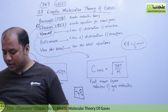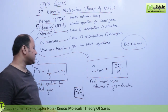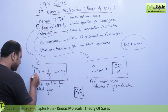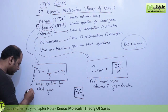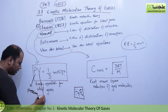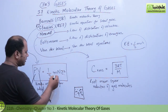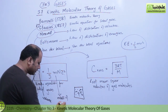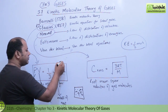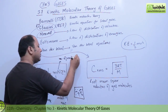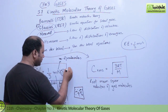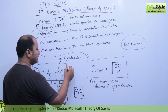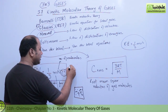The kinetic equation for ideal gases is: PV equals one-third MNC squared. Here P is the pressure, V is the volume, one-third is the numerical constant, M is the mass of the gas, N is the number of molecules, and C squared is the root mean square velocity. So C squared represents the root mean square velocity, often written as C-RMS.